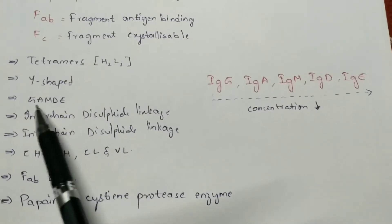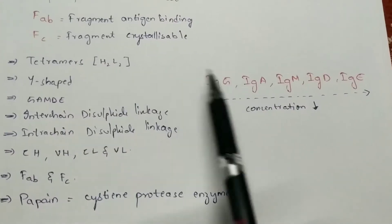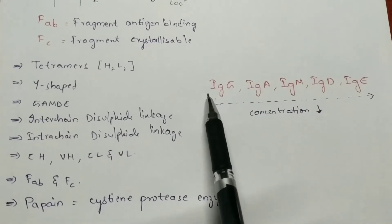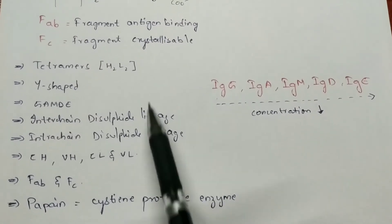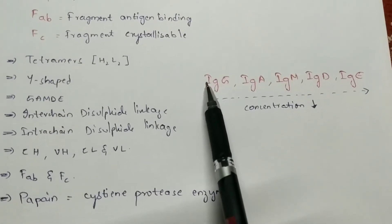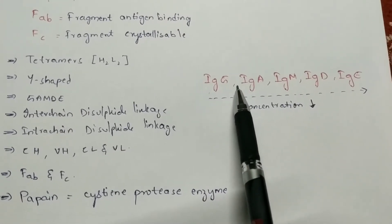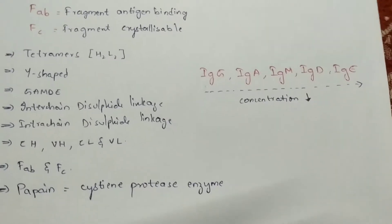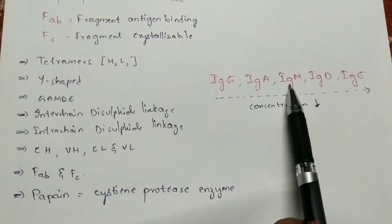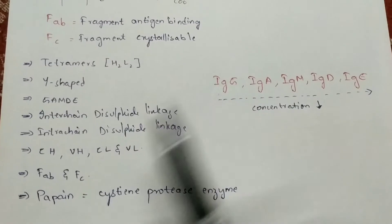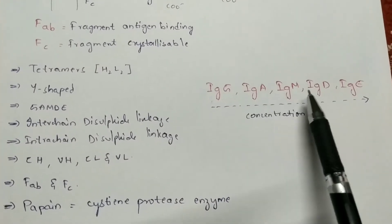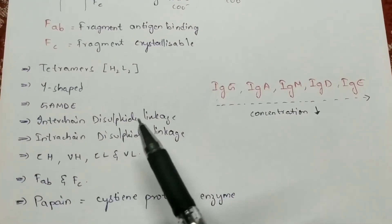There are five types of immunoglobulins: IgG, IgA, IgM, IgD, and IgE. IgG is the most abundant immunoglobulin in the immune system and has very low carbohydrate content. IgA is found in secretions such as saliva and tears. IgM is the largest immunoglobulin and is the first antibody produced during an infection.